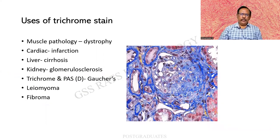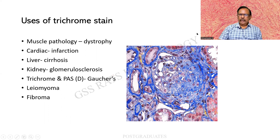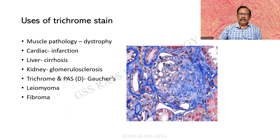The uses of the trichrome stain include: muscle pathology and dystrophy; cardiac infarction, where a normal muscle takes up red while an infarcted area replaced by fibrosis takes up blue; liver cirrhosis, where cirrhosis is fibrosis — connective tissue — that takes up blue; kidney glomerulosclerosis, where the crescent appearing in the periphery takes up blue; Gaucher's cells demonstrated by trichrome and PAS; leiomyoma where muscle takes up red; and fibroma where tumor cells take up blue.